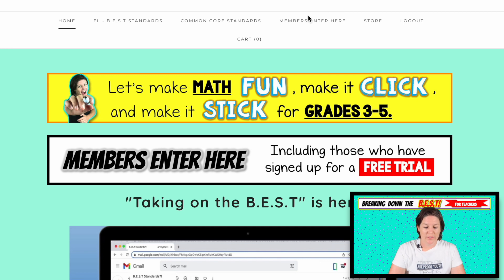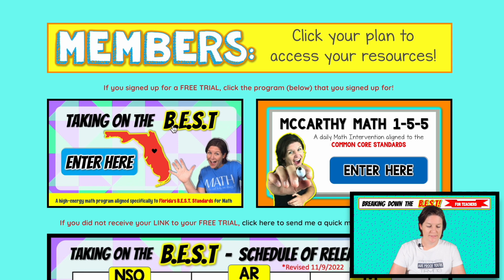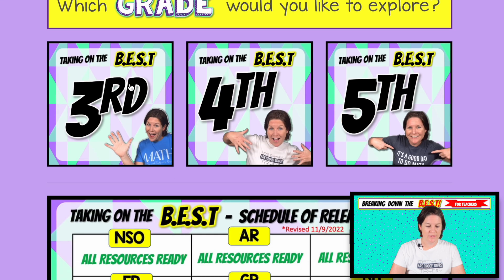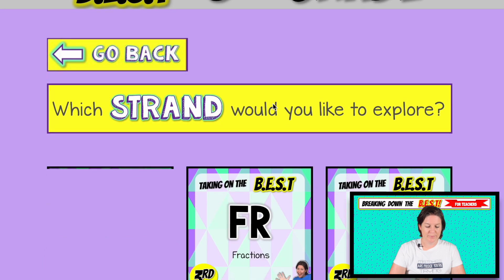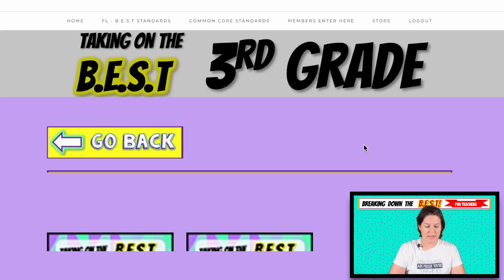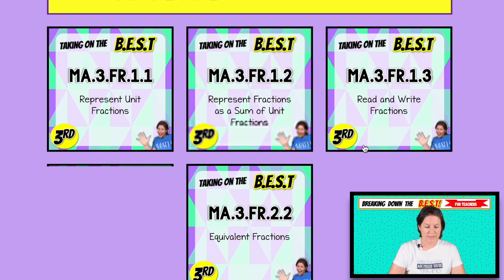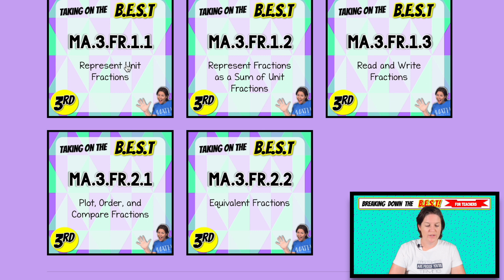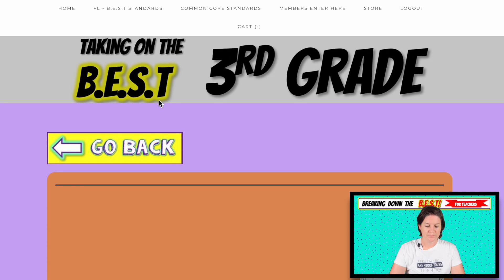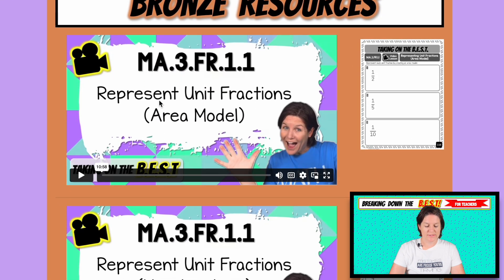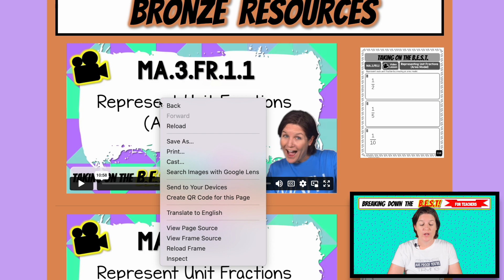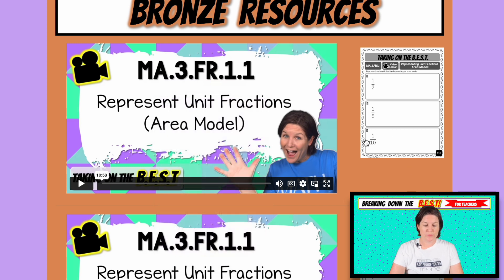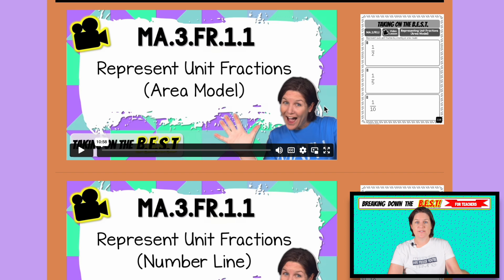So here we are on the website. We're going to go to members enter here. Taking on the BEST. We're in third grade. Click on the FR strand. And we're going to click on MA.3.FR.1.1 that is representing unit fractions. So as this loads up, your first page that you are brought to are your bronze resources. And you can see here that these are the video lessons and student guides, basically your notes for this lesson.